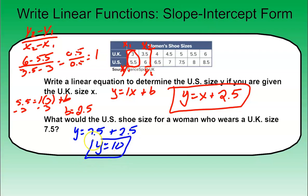And that's going to give us y equaling 2.5 plus 7.5 will give us a size 10. So we would say the shoe size, the U.S. size for a woman would be size 10. So that is how you can find or write the slope-intercept form of a linear equation problem.